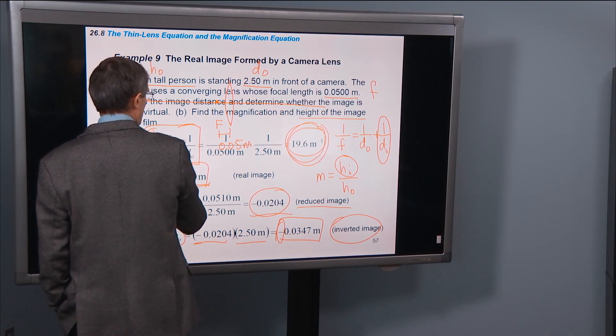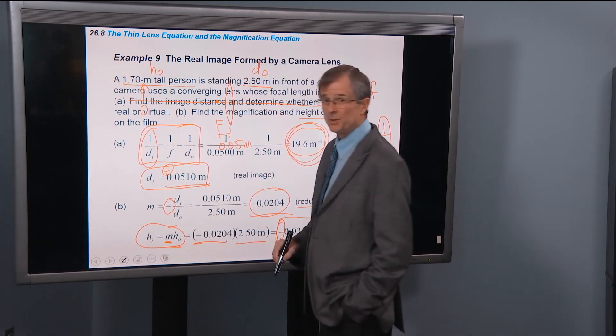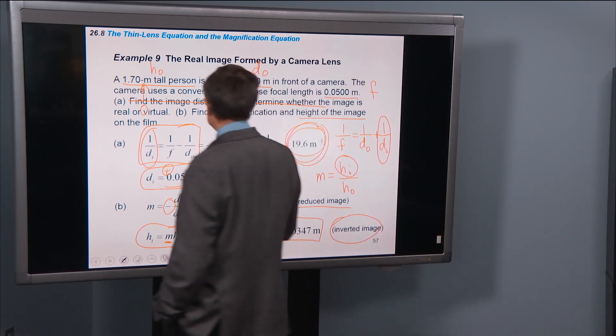This is probably not to scale, but probably close enough for our purposes. So this is object. Well, let's just do the ray diagram and see where the image is and see what it looks like.